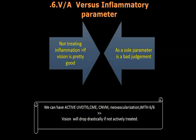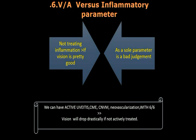Not treating uveitis when vision is good, using it as the sole parameter, is a bad clinical judgment. You can have a lot of problems — be it CME, CNVM, glaucoma, neovascularization, cataract, or active uveitis — even with vision of 6/6. It is a matter of time; the vision will drop drastically if not adequately treated at the correct time.